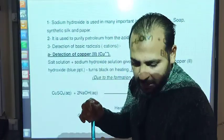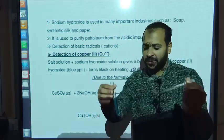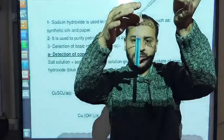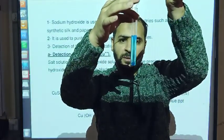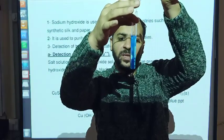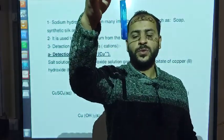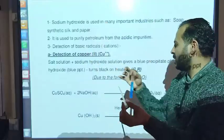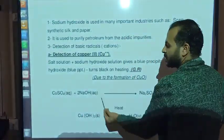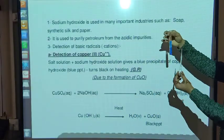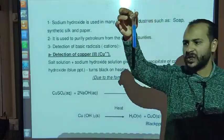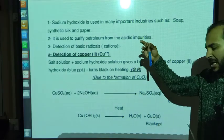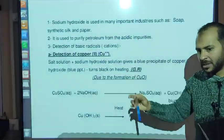When we add drops of sodium hydroxide to a copper sulfate solution, a blue precipitate forms. This blue precipitate is copper hydroxide (Cu(OH)₂). After heating, copper hydroxide changes into copper oxide (CuO), which has a black precipitate. So the color changes from blue to black upon heating.